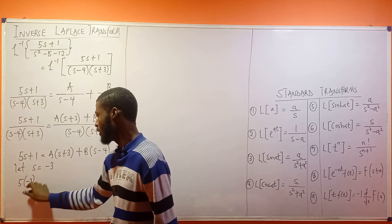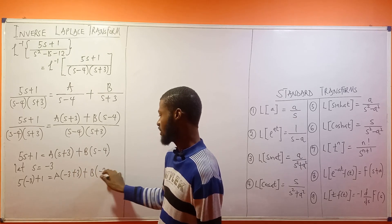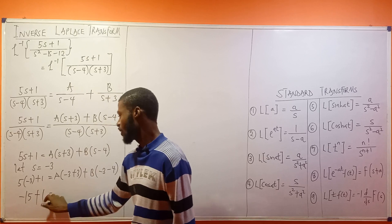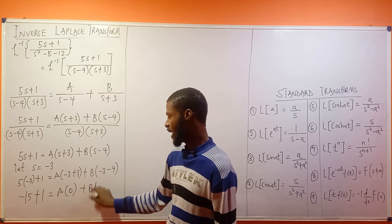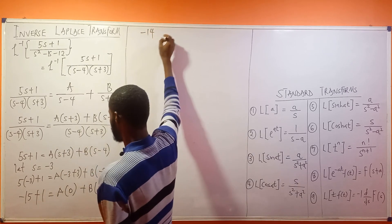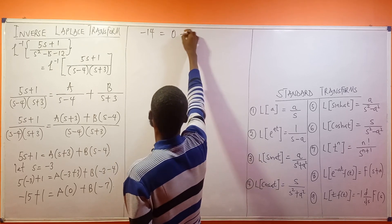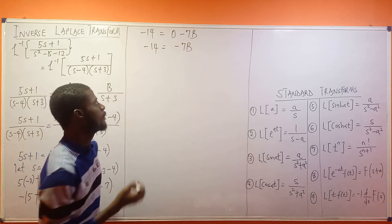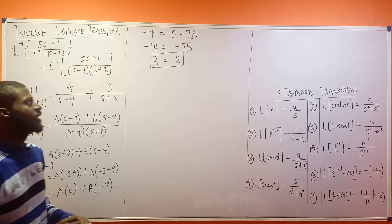Substituting s = -3: 5(-3) + 1 = A(-3 + 3) + B(-3 - 4), which gives -15 + 1 = A(0) + B(-7), so -14 = -7B. Dividing both sides by -7, we get B = 2.